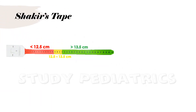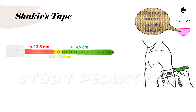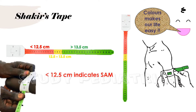Shakir's tape is yet another modified technique to measure MUAC, but with an easy-to-use specialized instrument. The color coding is very important, as the health worker does not have to pay much attention on the reading, since the color itself indicates the nutritional status. Red indicates SAM, where a MUAC value of less than 12.5 cm is seen on Shakir's tape.